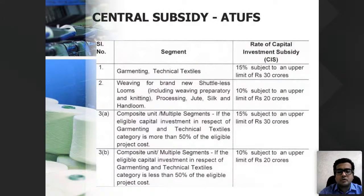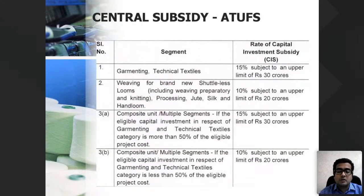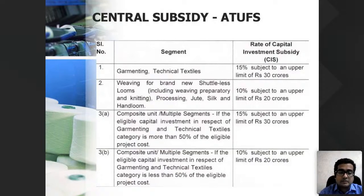The subsidy amount under ATUFS is 15% on the basic cost of the machine. For example, if you install machinery worth 2 crore, you will get 30 lakhs as capital subsidy. For technical textile or garmenting units it is 15%, and for brand-new shuttleless looms under weaving it is 10%, subject to an upper limit of 20 crore for weaving and 30 crore for garment and technical textile.